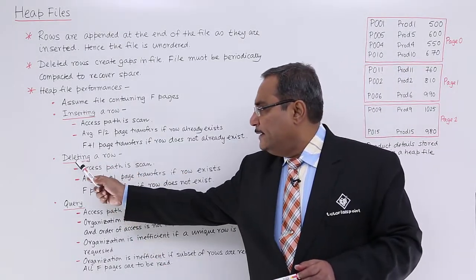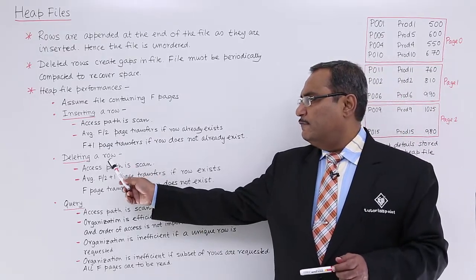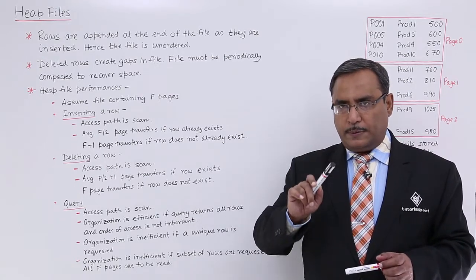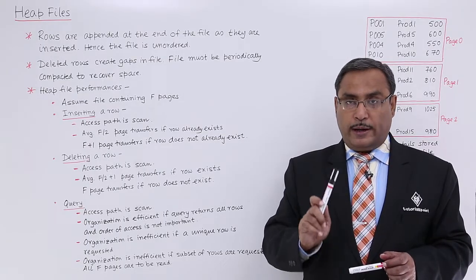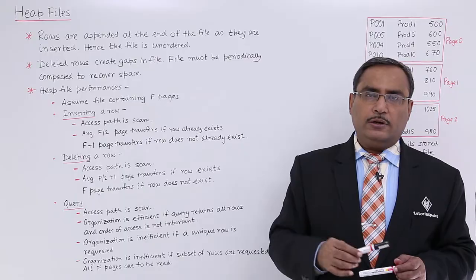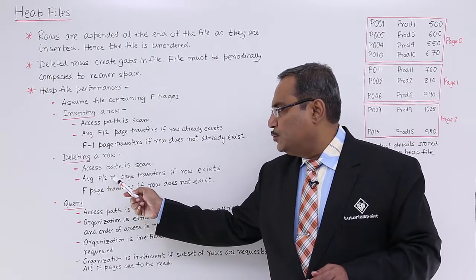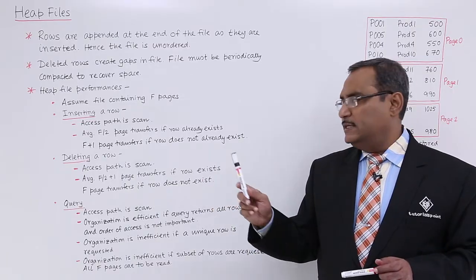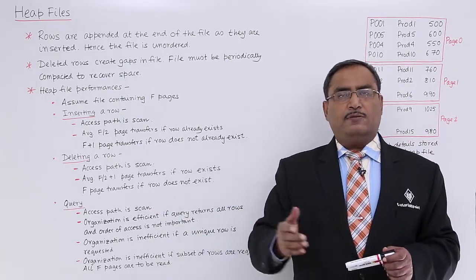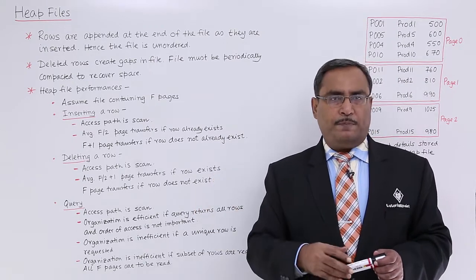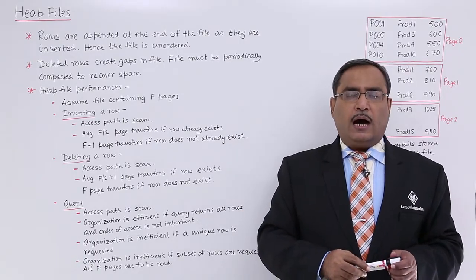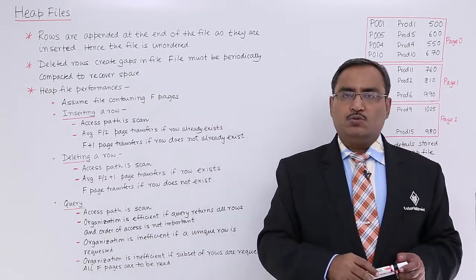Now let us discuss deleting a record from the heap file. The access path is scan — meaning I shall have to scan sequentially through all tuples to reach the required tuple to be deleted. On average, f/2 + 1 page transfers are required if the row is pre-existing. Otherwise, if the row does not exist, f page transfers are required, since I must search through all f pages.